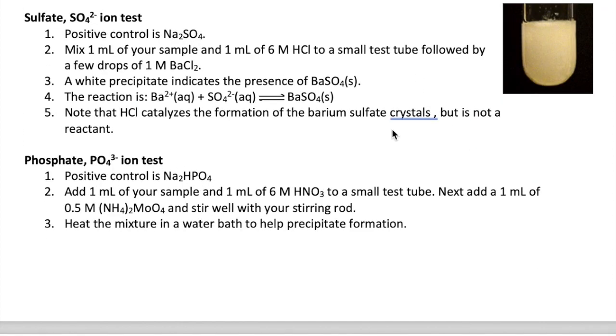Let's look at the next test, which is for the sulfate ion. In this case, we would use sodium sulfate as the positive control. You should mix your sample with HCl and then a few drops of barium chloride. If sulfate is present, a white precipitate, as shown in the picture, will appear. The HCl is just a catalyst that helps the reaction to occur. The actual reaction is just between barium and sulfate ions to produce barium sulfate solid.